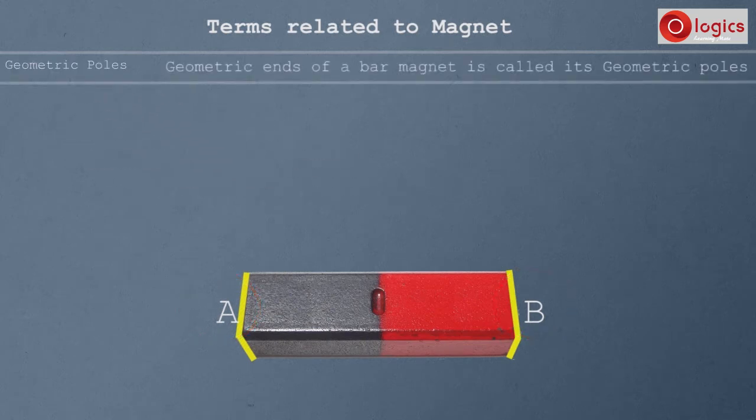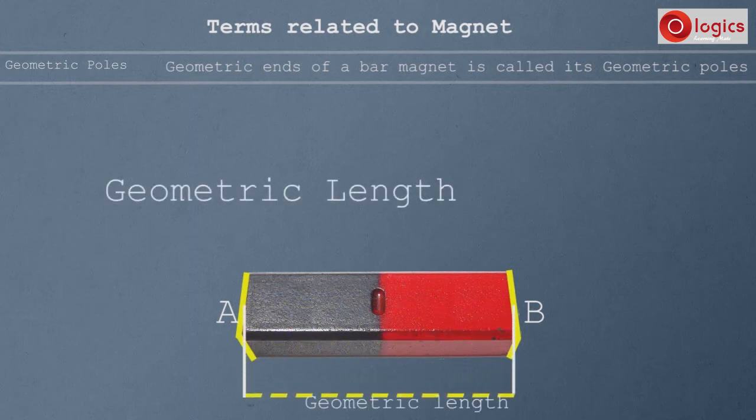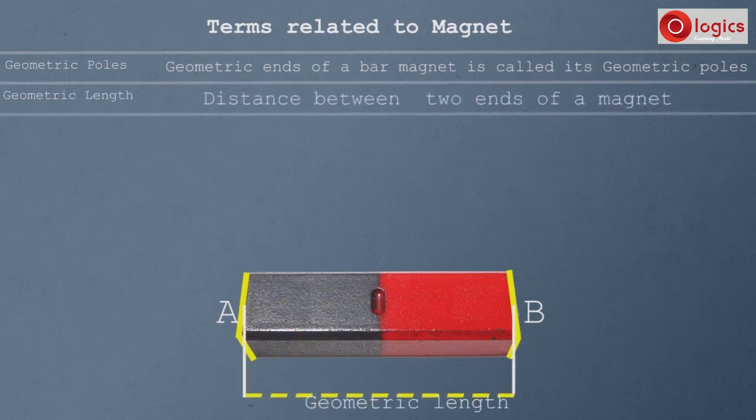Geometric ends of a bar magnet is called its geometric poles. The length between A and B is called geometric length. Distance between two ends of a magnet is geometric length.